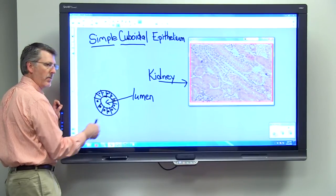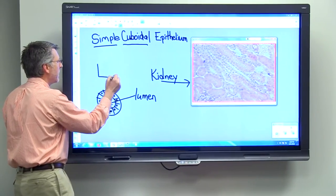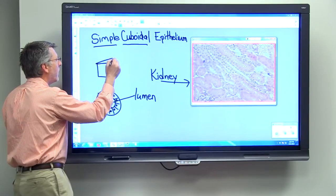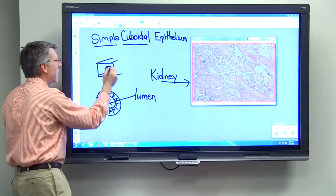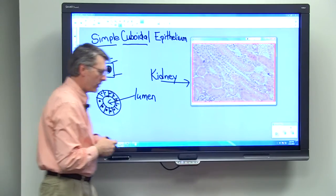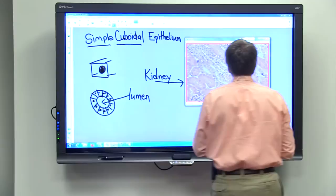And so you can see the simple cuboidal cells that I've drawn here. If we wanted to look at one cube-shaped cell, we could draw it something like this, with the oval nucleus sort of in the middle of the cube.